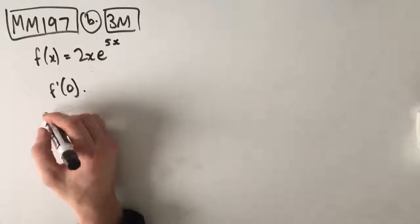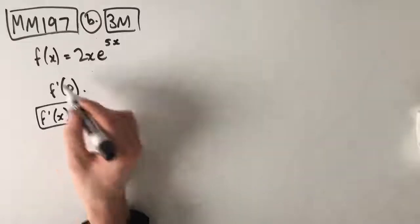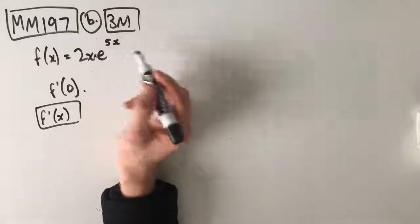So, in order to find f dash of 0, we're first going to need to find f dash of x. We're going to need to find our derivative function. Looking at this, we can see that this is a product rule.